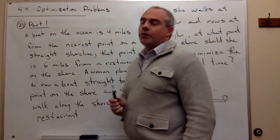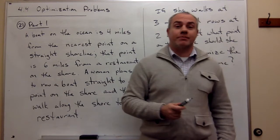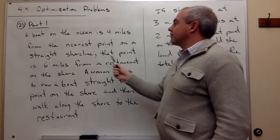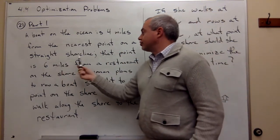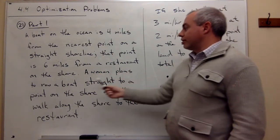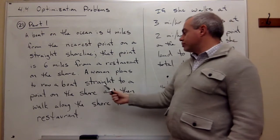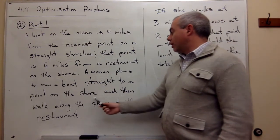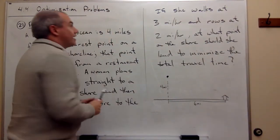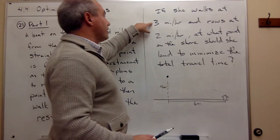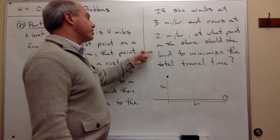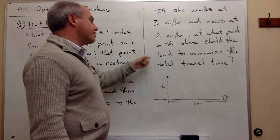Let's read through the problem and see what it is we're trying to maximize or minimize. A boat on the ocean is four miles from the nearest point on a straight shoreline, and that point is six miles from a restaurant on the shore. A woman plans to row a boat straight to a point on the shore and then walk along the shore to the restaurant. If she walks at three miles an hour and rows at two miles an hour, at what point on the shore should she land to minimize the total travel time?